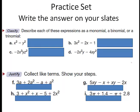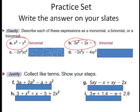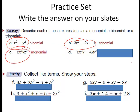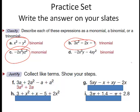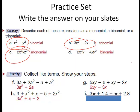Here are some practice sets. First, describe each as a monomial, binomial, or trinomial. X squared minus Y squared is a binomial. The next one is a trinomial. The single term is a monomial. And the last one here is a binomial. Now collect like terms: for F, you should get 3X squared plus 2A. For G, 6XY minus 3X. For H, 3X squared plus X minus 2 — in descending order. And for I, 2π plus 4.2.